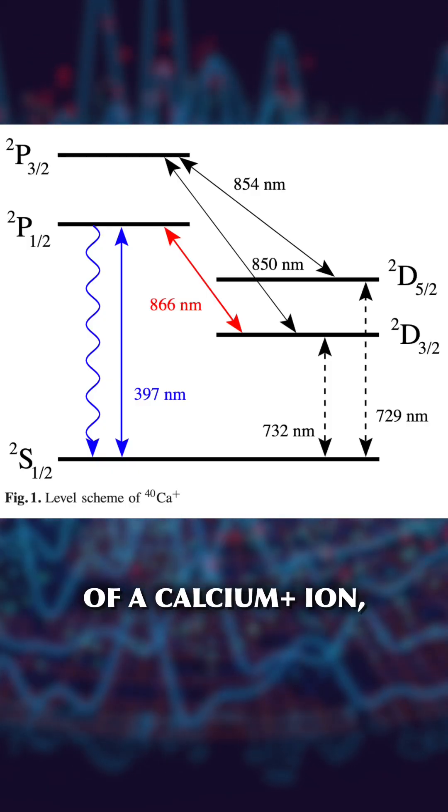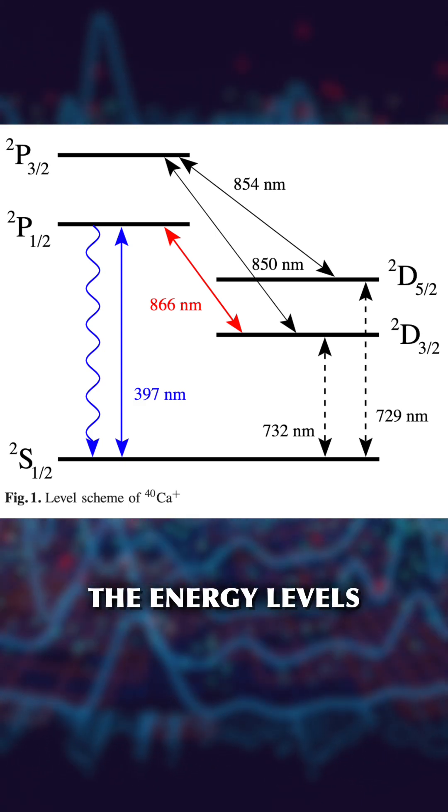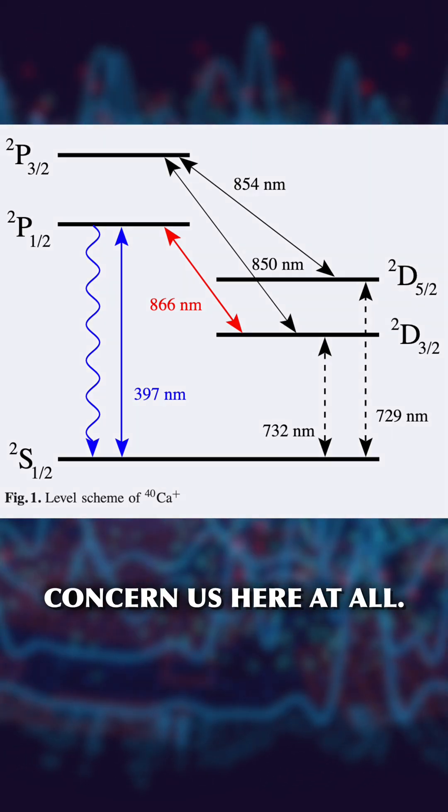As a concrete example, this is part of the energy level structure of a calcium plus ion used in some ion trap quantum computers today. The energy levels are numbered in the arcane ways of spectroscopy, but this shall not concern us here at all.